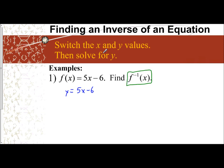what I do is switch the x and y values. So instead of y equals 5x minus 6, I'm going to say x equals 5y minus 6, and then solve for y.